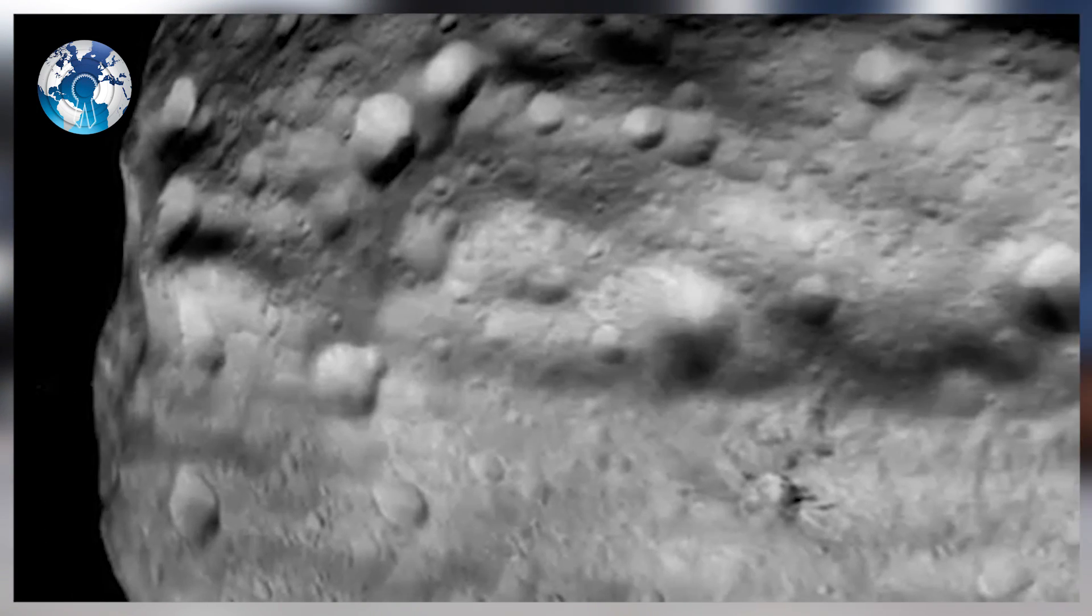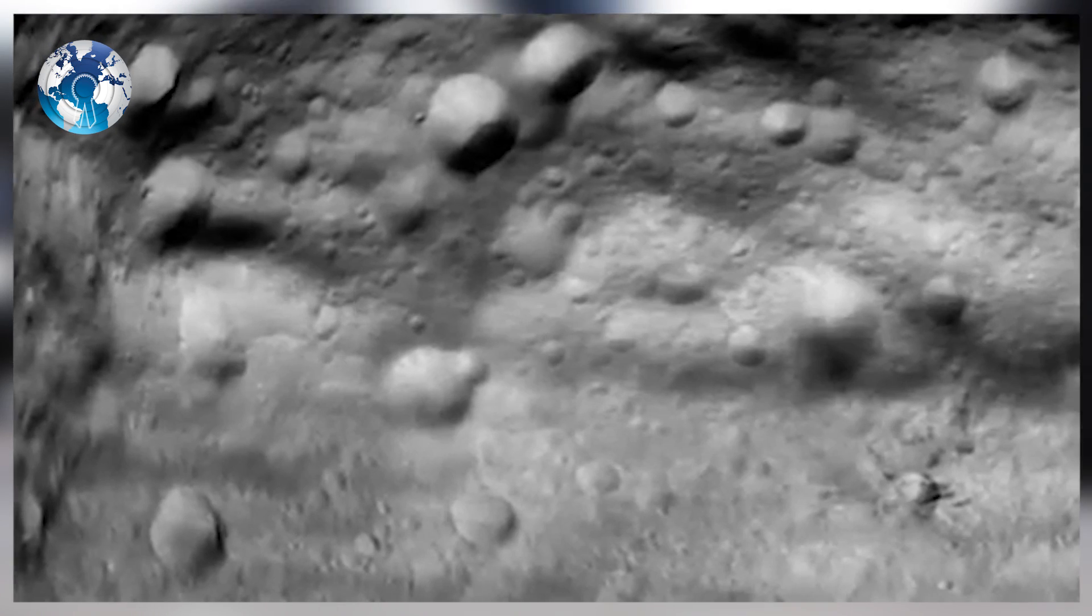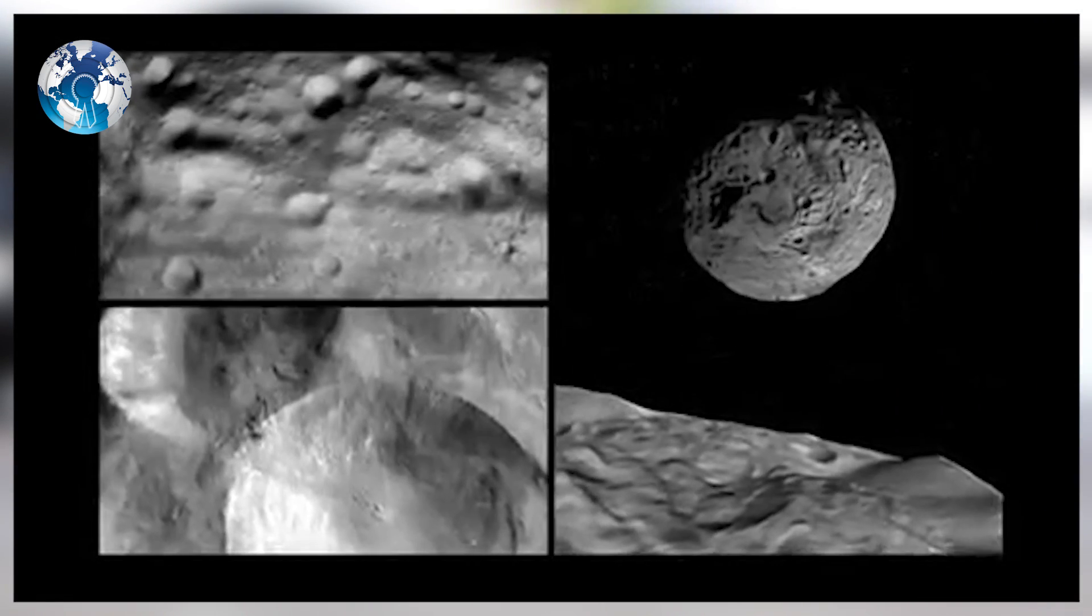The asteroid Florence was discovered by Schelte Bus at Siding Spring Observatory in Australia in March 1981.